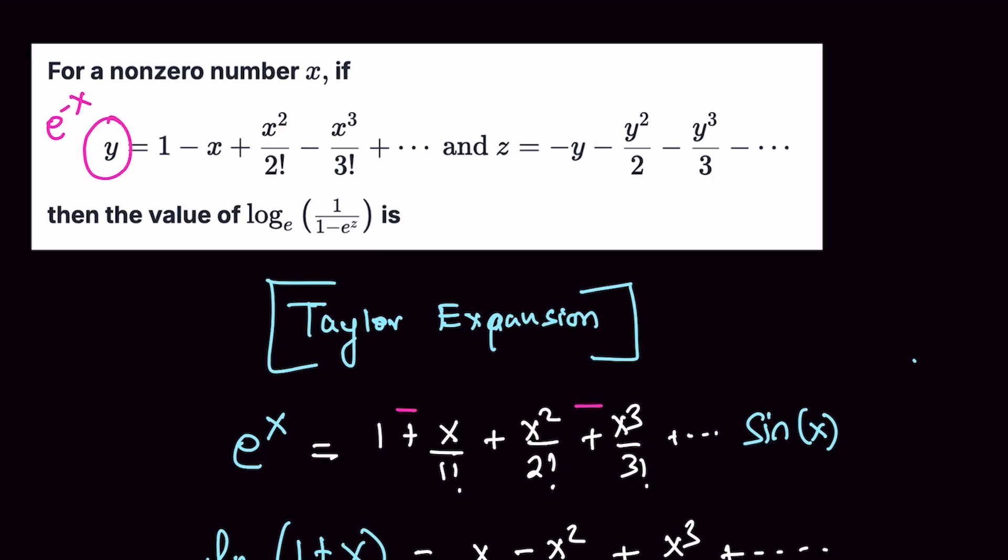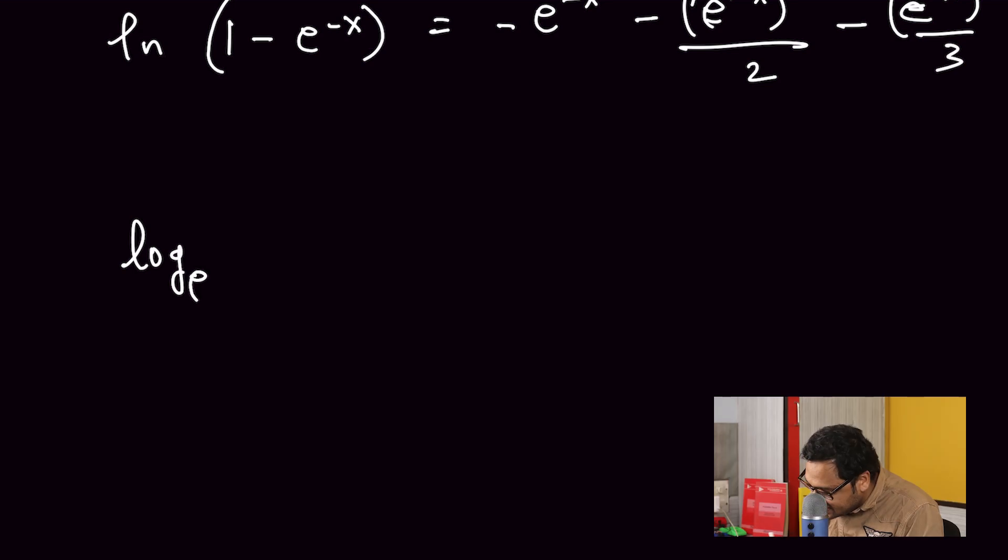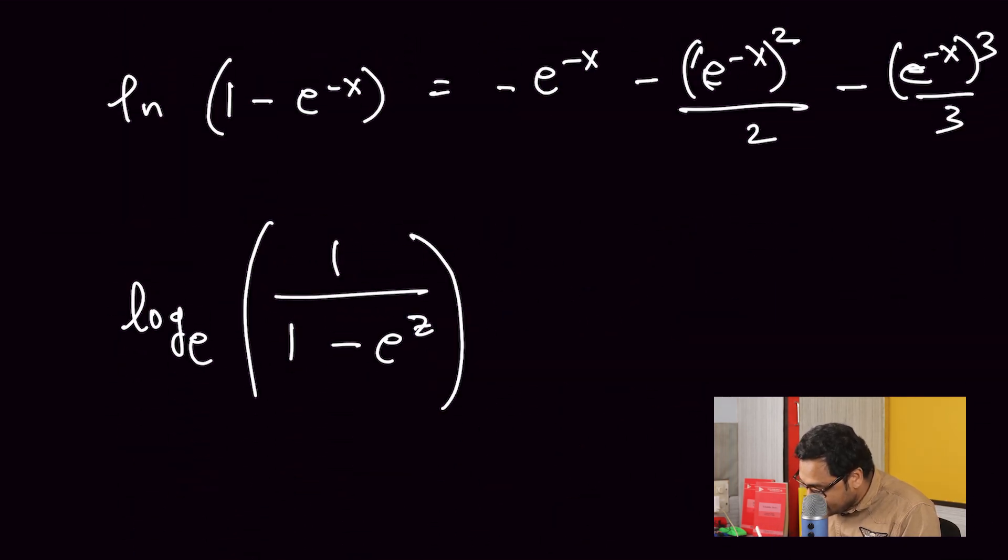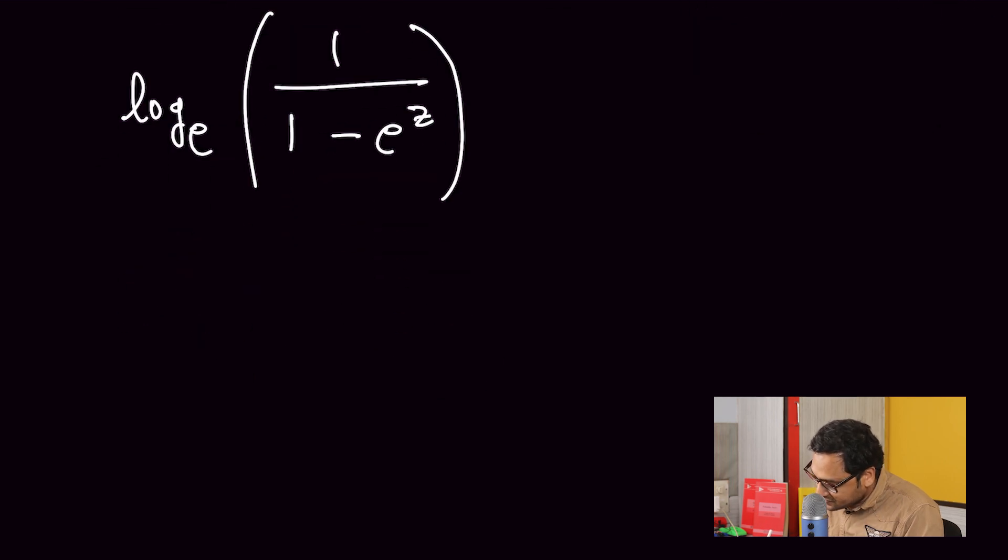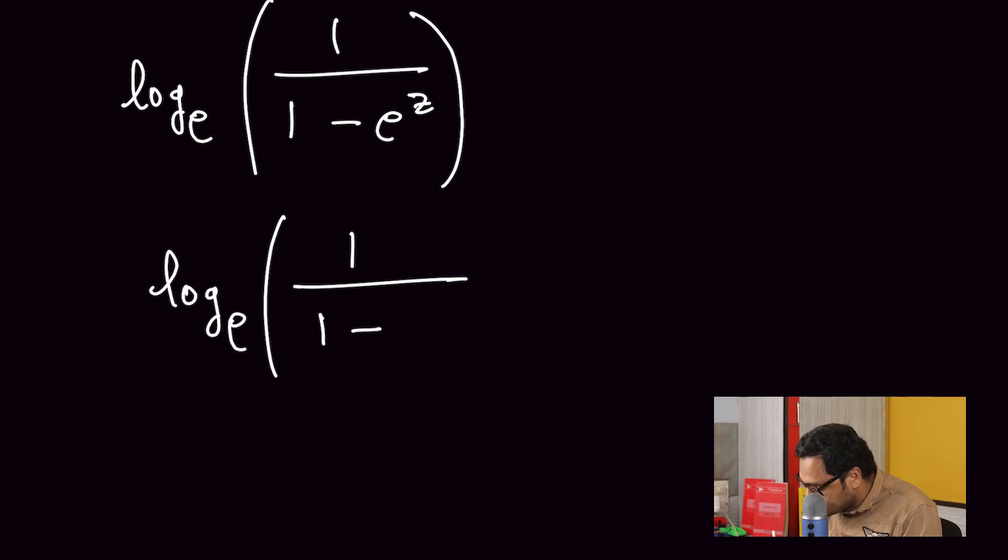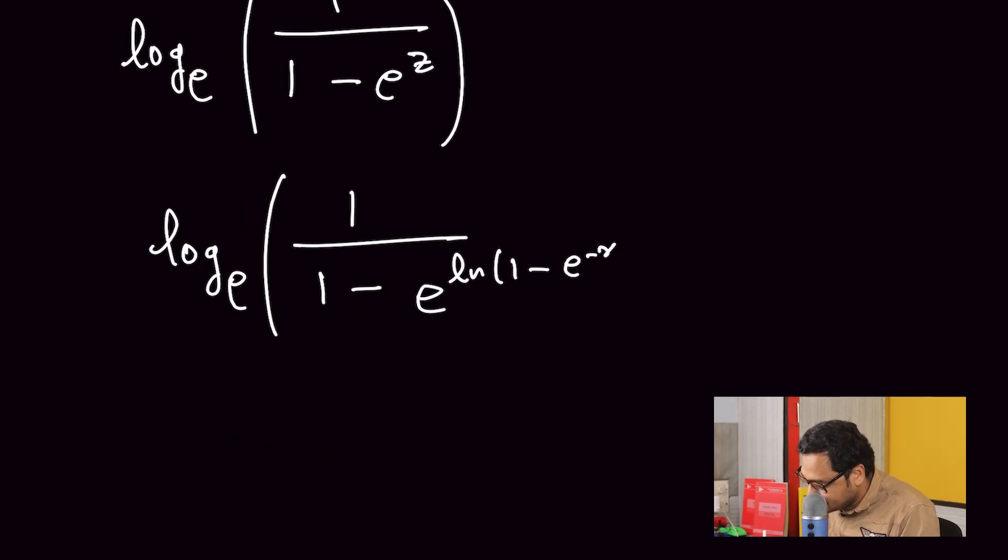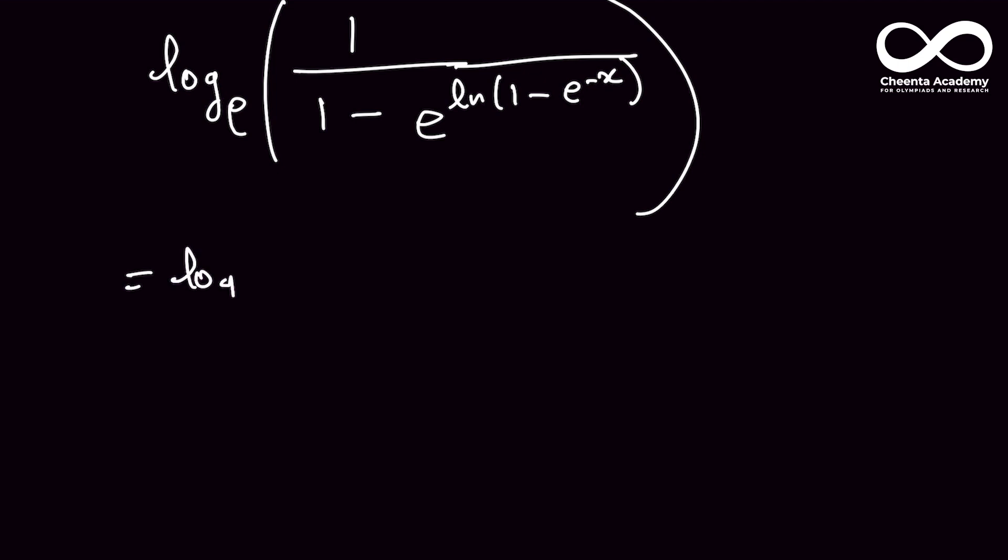And we're almost done, because now I have an expression for z. I have an expression for z, and I can replace z in this final expression. So let's do that. We have log base e, 1 by 1 minus e to the power z. This is z. So instead of z, I can just replace this. So if I do that, I have log base e, 1 by 1 minus e to the power ln of 1 minus e to the power minus x. E to the power ln of something is just that thing. So we have log base e, 1 by 1 minus 1 minus e to the power minus x. These two cancels off. So we have log base e, e to the power x, which is just x. So the final answer is x.